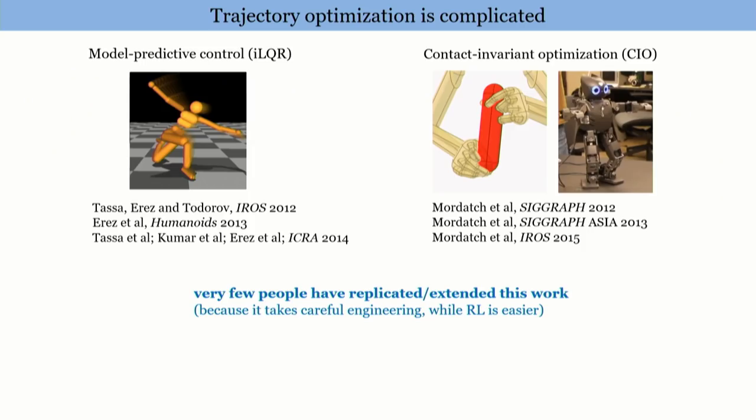So these things do pretty amazing stuff. Peter Bill's classic work on helicopter flying around, that was MPC. Evangelos Theodorou's work on cars racing around, that's MPC. So trajectory optimization does work. And when we did this seven years ago, that was way ahead - actually deep learning was not even a thing at the time and DeepMind was just getting founded. So you would have thought that people would have used these techniques as a starting point, but that's not at all what happened. Very few people actually replicated or extended this work, mostly because that requires careful engineering while reinforcement learning is just easier.